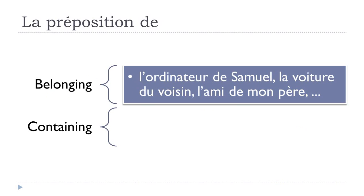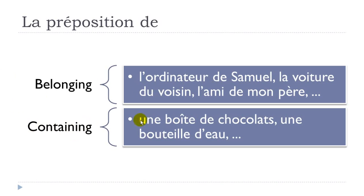Another use of de is the containing concept: une boîte de chocolat — a box of chocolates. Une bouteille d'eau — a bottle of water. Note that de + vowel contracts: de + eau becomes d'eau. You should use de to express what a container holds. Also for materials — what something is made of: un rideau de lin (a linen curtain), une chaise de bois (a wooden chair).